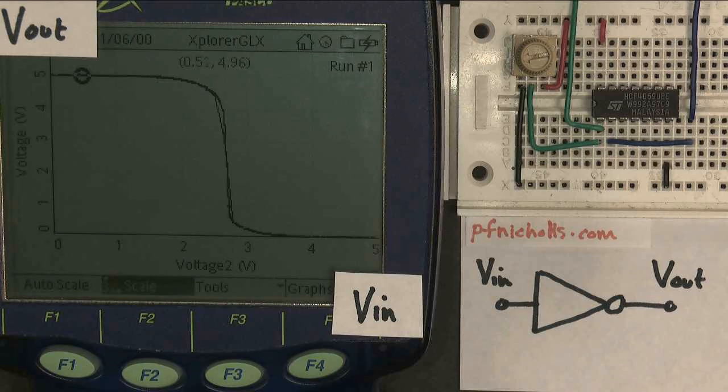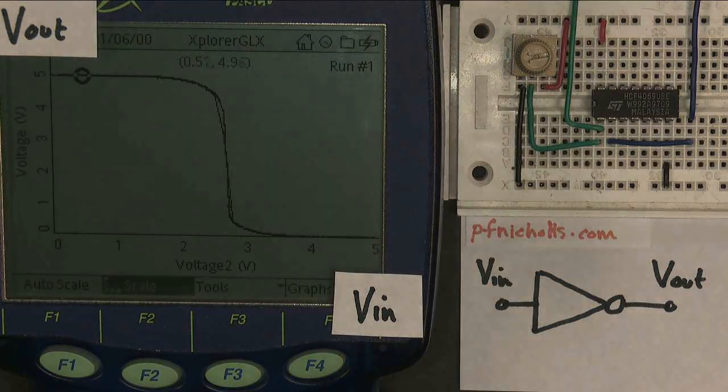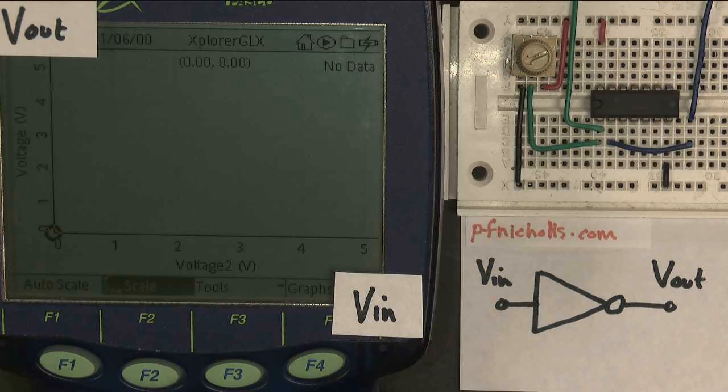And sometimes this might be a problem. So we need to see how we can overcome this. I've made a very subtle change to the circuit. I've changed the chip. This is now not an inverter, a NOT gate, but a Schmitt inverter, a Schmitt NOT gate. Let's see how it behaves.